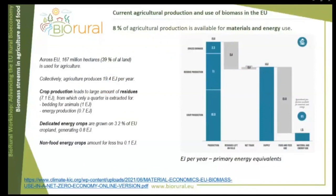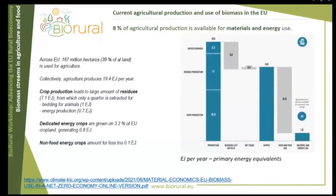A third of that is generated by residues of crop production. In total, three quarters of residual biomass is not being extracted, while at the same time energy crops contribute much less in energy equivalents — around five percent of primary energy equivalent. This is a significant gap. We also have to take into account that 40 percent of European land is used for agriculture.